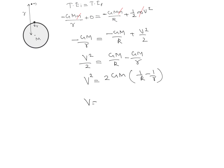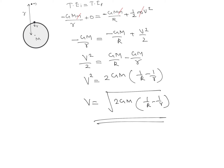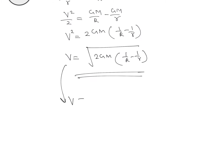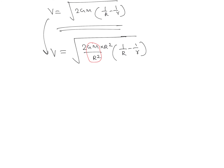We can write v equal to the square root of 2 times G times M times the quantity 1 over R minus 1 over r. Since the answer needs to be in terms of small g, the acceleration due to gravity on the surface of the Earth, we multiply by R squared divided by R squared. The term GM over R squared is nothing but small g, so we write v equal to the square root of 2 times g times R squared times the quantity 1 over R minus 1 over r.